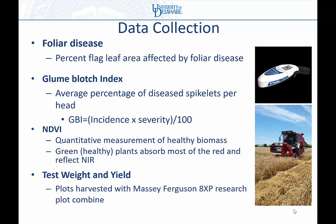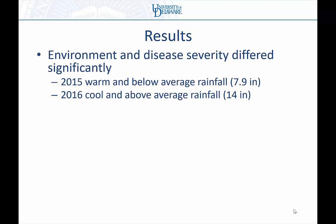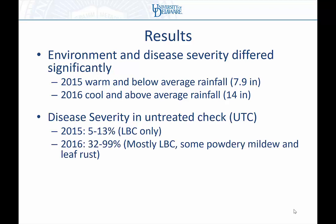The environments ended up being completely different between the two years, which provided a wide range of conditions. 2015 was a warmer, drier year with below average rainfall. 2016 was the complete opposite — 14 inches of rain during just those three months, and it was cool. In 2015, untreated checks had 5 to 13% flag leaf disease — only the leaf blotch complex showed up. In 2016, things turned around with 32 to 99% severity on untreated checks — mostly leaf blotch again, but this time some leaf rust and powdery mildew showed up as well.